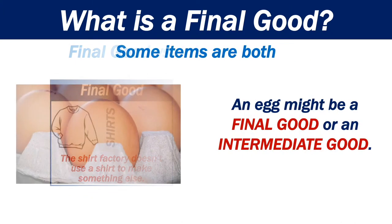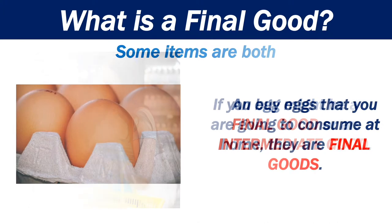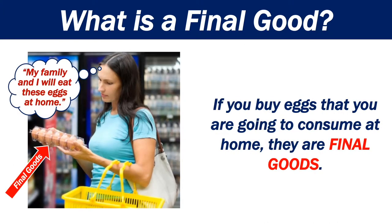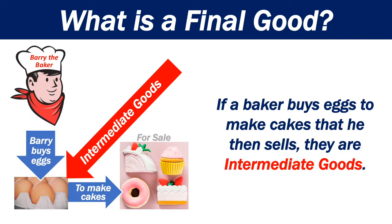But some items are both. An egg, for example, can either be a final good or an intermediate good. If you buy eggs that you are going to consume at home, then they are final goods. However, if a baker buys eggs in bulk to make cakes that he then goes on to sell, then they are intermediate goods.